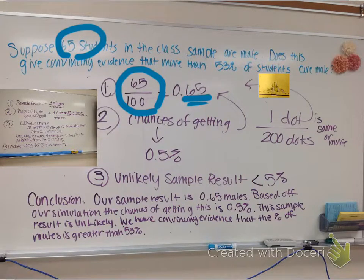We have evidence for what? Well, we answer the question. That's what step four is. We have evidence. Now answer the question. We have convincing evidence that the percentage of males is greater than 53%. And again, that there is answering this question.